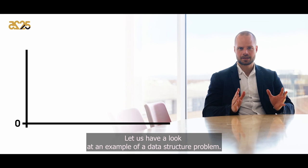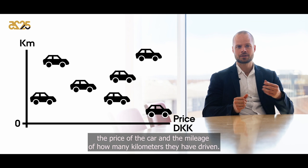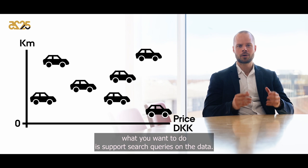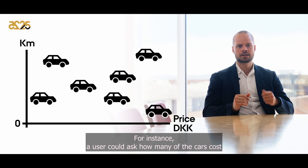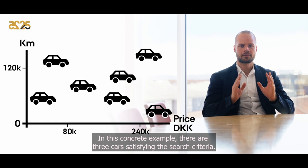Imagine that you're storing a database of cars for sale. Each of these cars have different properties — for instance, the price of the car and the mileage of how many kilometers they have driven. When storing such a database, what you want to do is support search queries on the data. For instance, a user could ask: how many of the cars cost between 80,000 Danish crowns and 240,000 Danish crowns, while having a mileage of at most 120,000 kilometers? In this concrete example, there are three cars satisfying the search criteria, so the answer to the search query is three.